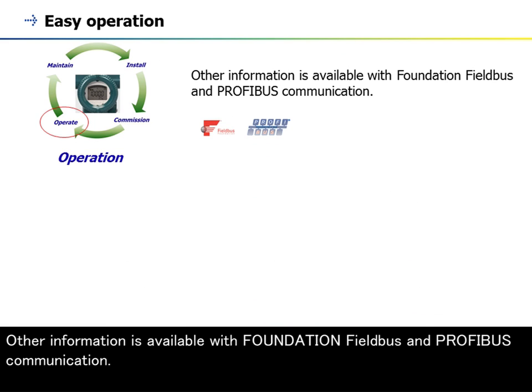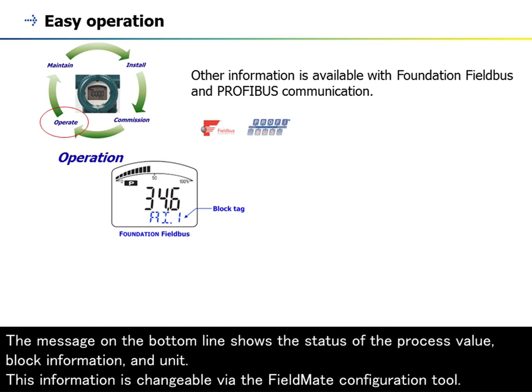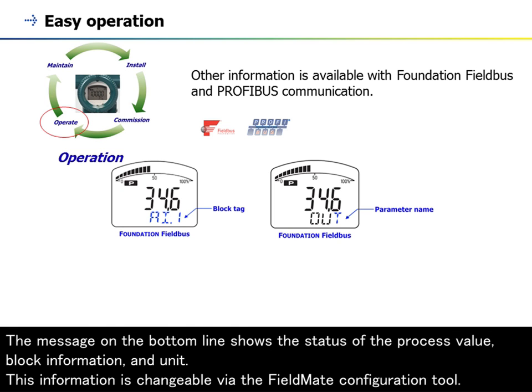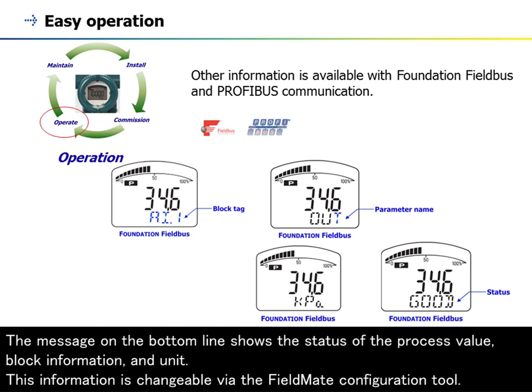Other information is available with Foundation FieldBus and PROFIBUS communication. The message on the bottom line shows the status of the process value, block information, and unit. This information is changeable via the FieldMate configuration tool.